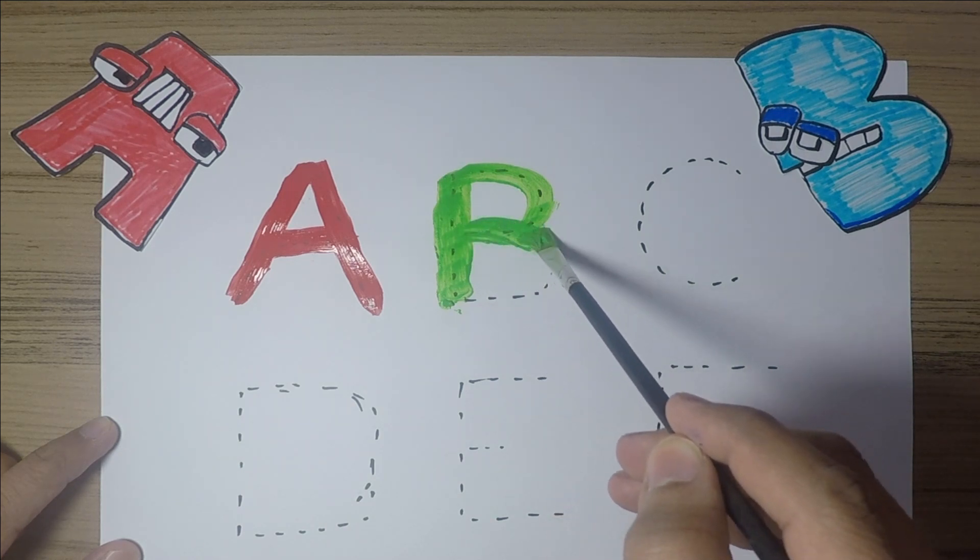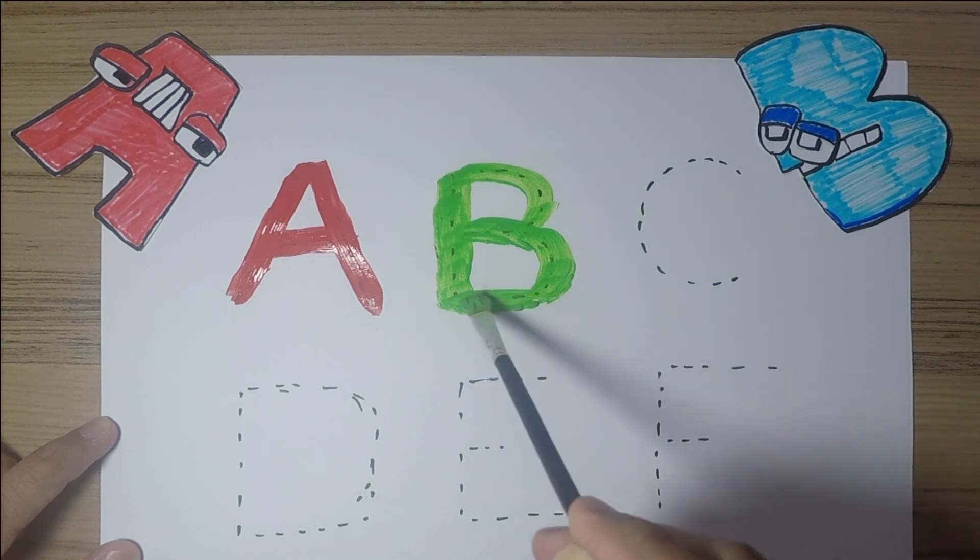Let's use the color purple to paint alphabet C. You know C stands for cat and catch.